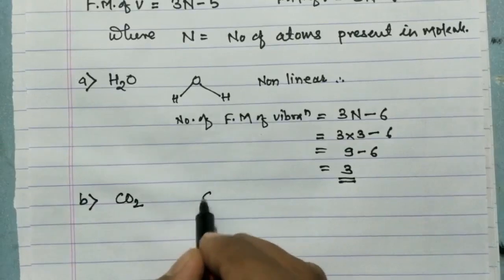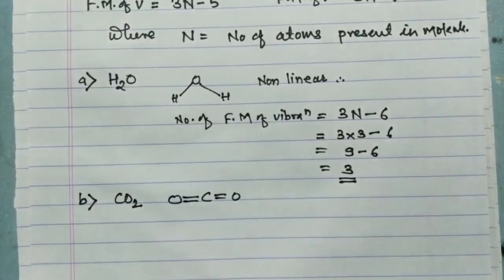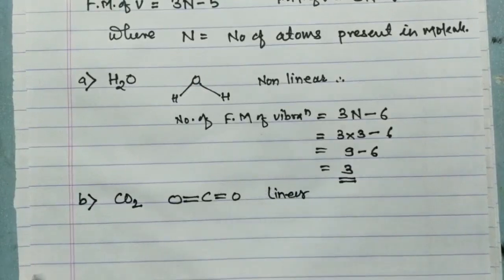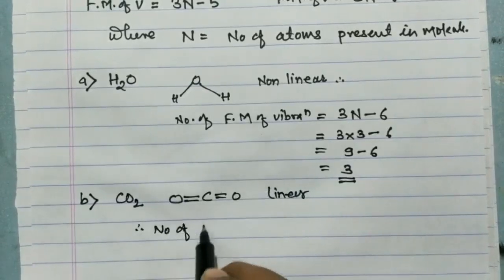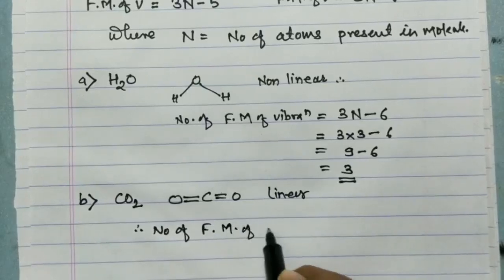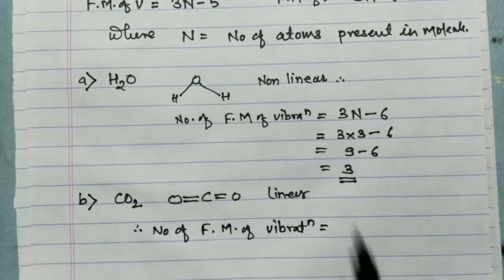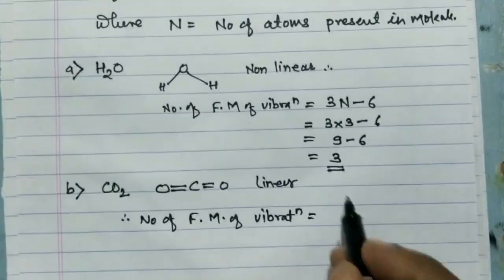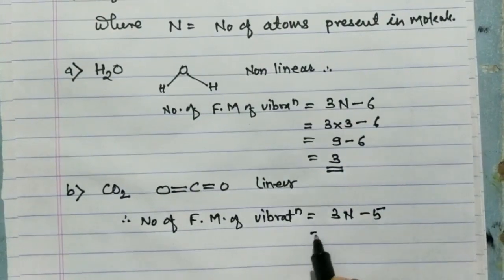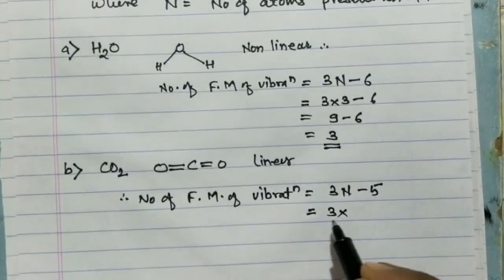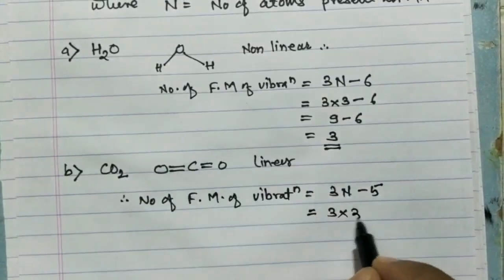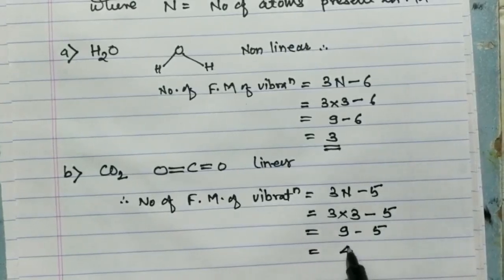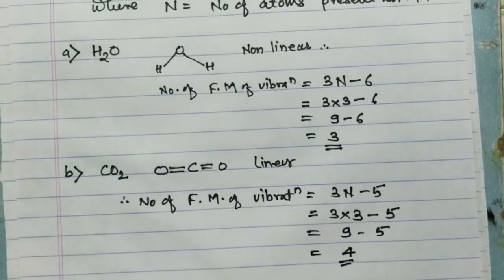Since CO₂ is linear, the number of fundamental modes of vibration = 3n − 5. There are 3 atoms present: 3 × 3 − 5 = 9 − 5 = 4. So CO₂ has four fundamental modes of vibration. In this way we can easily find out the number of fundamental modes for any molecule.